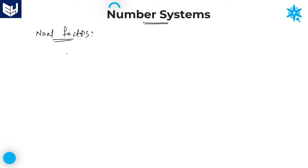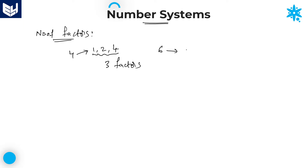For example, let us take the number 4. For the number 4, the factors are 1, 2, and 4. So the number of factors is 3. Now if you take 6, the factors are 1, 2, 3, and 6 — that gives us 4 factors total.